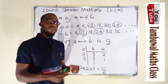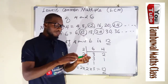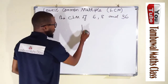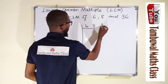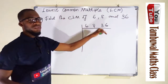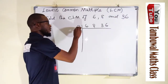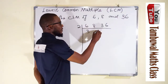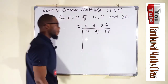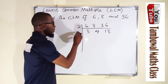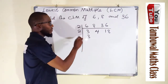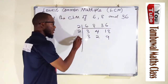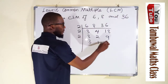This successive division method is especially useful for larger numbers. Now we want to find the LCM of six, eight, and thirty-six. We perform successive division using prime numbers. All three numbers are even, so we start with two. Two into six is three, two into eight is four, two into thirty-six is eighteen. We still have even numbers, so we divide by two again: two cannot go into three, so we drop it down; two into four is two; two into eighteen is nine.